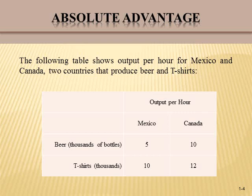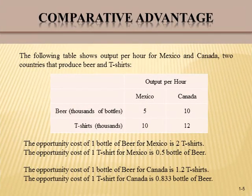Now let's take an exercise about comparative advantage. The following table shows output per hour for Mexico and Canada, two countries that produce beer and t-shirts — the same example as before. In the definition of comparative advantage, the country enjoying a comparative advantage is the one with a lower opportunity cost. The first step is to calculate the opportunity cost of one bottle of beer for Mexico and for Canada, and the same for t-shirts.